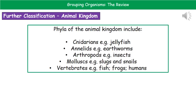Looking in more detail at the animal kingdom, the next step down from kingdom is the phylum. There are five different phyla within the animal kingdom: cnidarians, such as jellyfish; annelids, like earthworms; arthropods, like insects; mollusks, like slugs and snails; and vertebrates, which include humans, frogs, and fish.